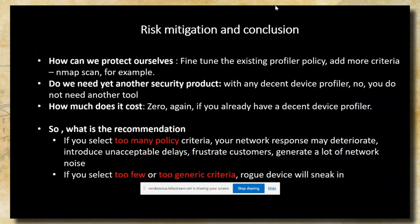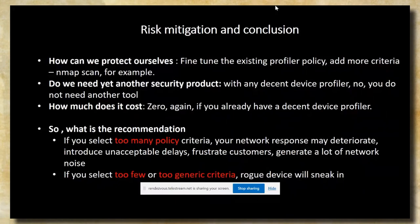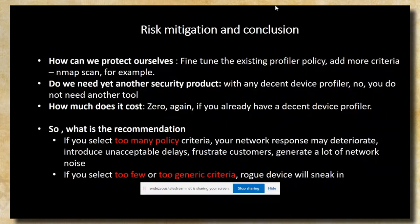What about risk mitigation, and what can we conclude? The most important step is to fine-tune the existing profiler policy — for example, add more criteria and do not rely on a single policy or single criterion. If you already have DHCP profiling, add an NMAP scan. You can achieve this with the device profiler at no additional cost if you have any decent device profiler, and there are many available. You should be able to fine-tune your policy and sharpen your edge of detection.